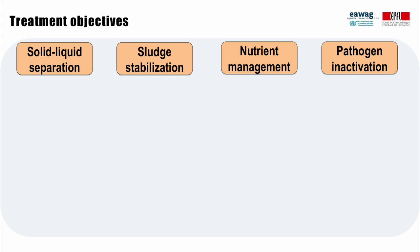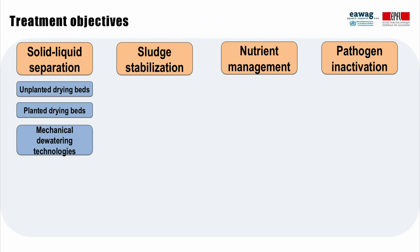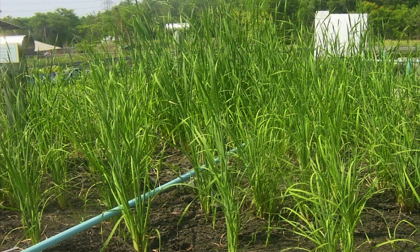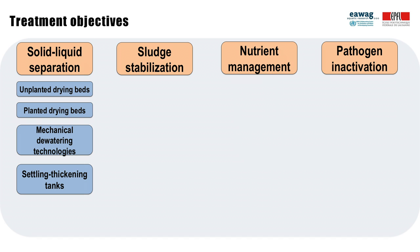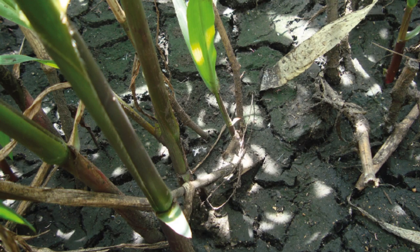Technologies for solid-liquid separation include drying beds, mechanical dewatering technologies, and settling thickening tanks. These are designed to separate solid and liquid material in fecal sludge. For example, on this planted drying bed in Thailand, sludge is loaded on the surface of the sand filter layer. Solids remain on the surface while the liquid passes through the filter layer and is collected at the bottom in a drainage network for further treatment. With planted drying beds, sludge can remain on the surface for up to 10 years and also become stabilized.